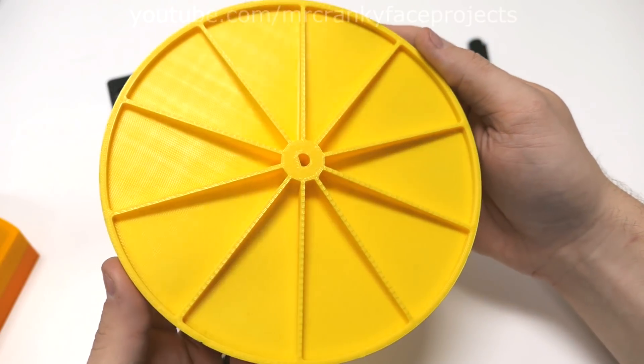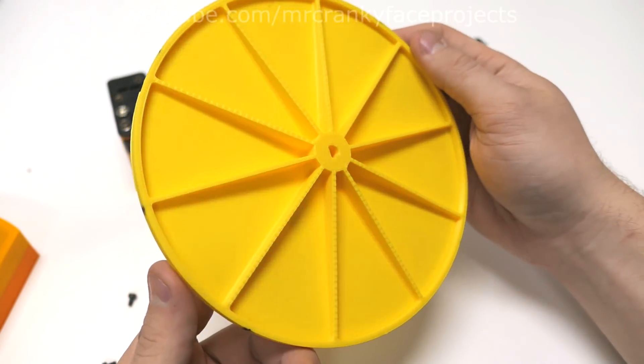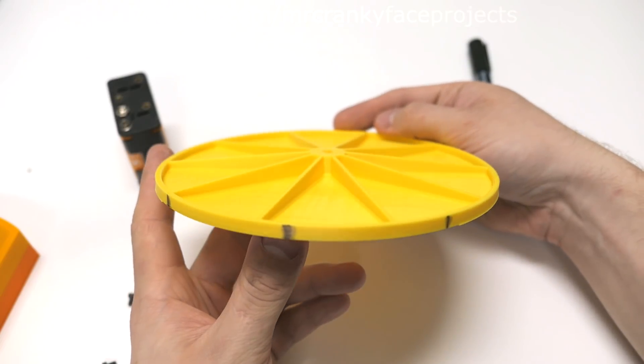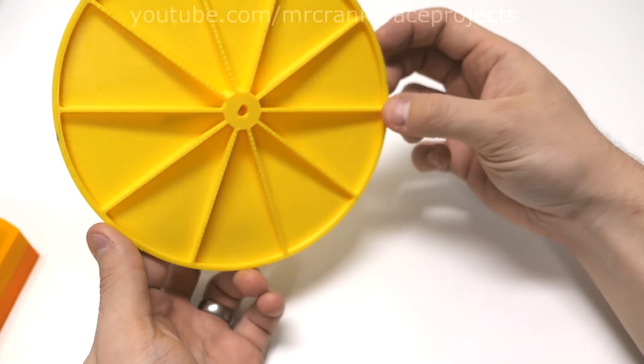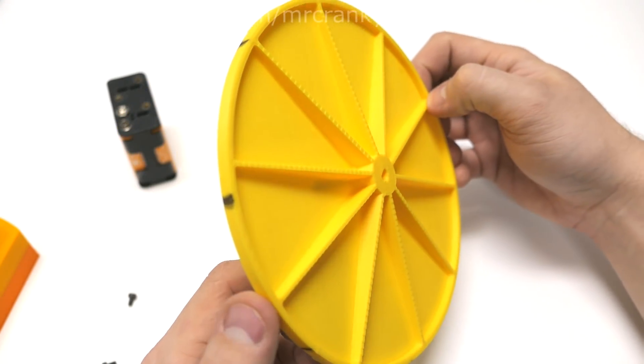I ended up making the top thinner and reinforcing it with some walls to save on material and printing time compared to making the entire thing thicker. Not to mention it just looks cooler with some more details.